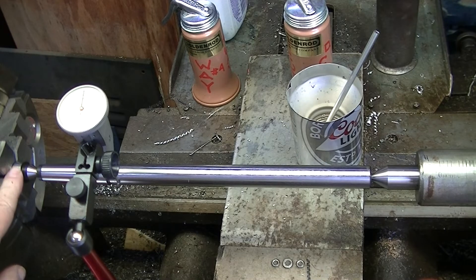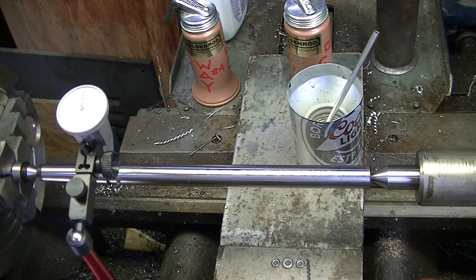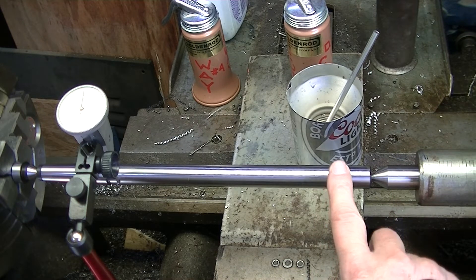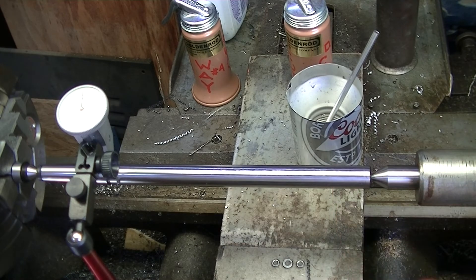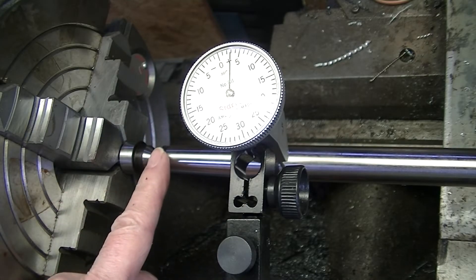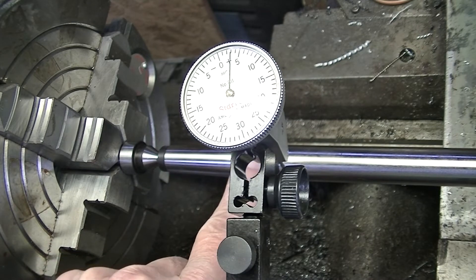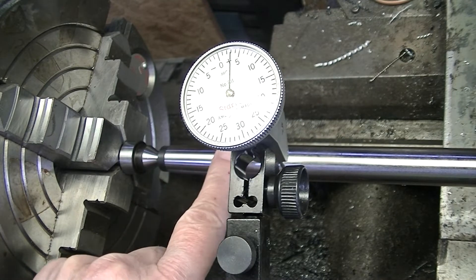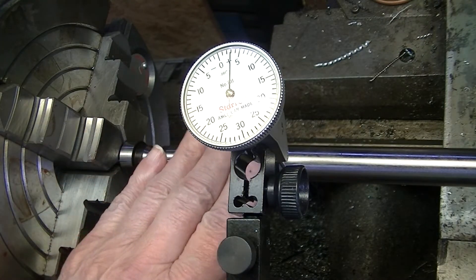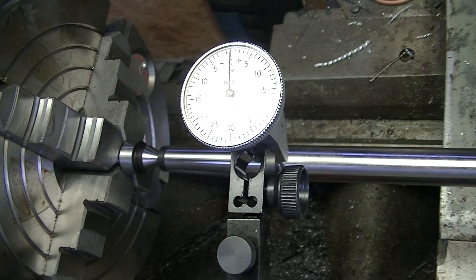Again this is the half inch shank dead center, number two Morse taper dead center. This bar is about five eighths or so. Now the first three inches or two and a half inches is a Morse taper number two, so I'm not able to use that for the test I'm doing now.